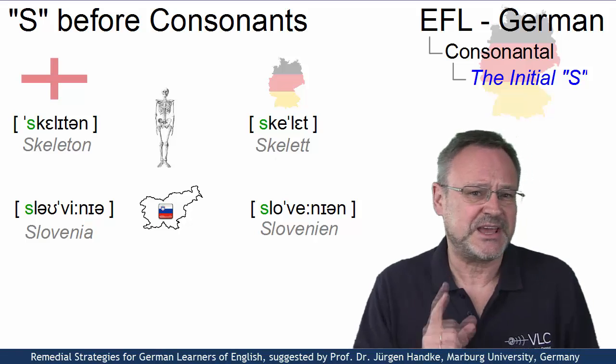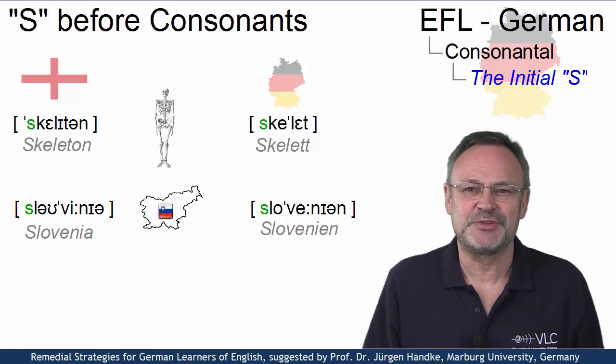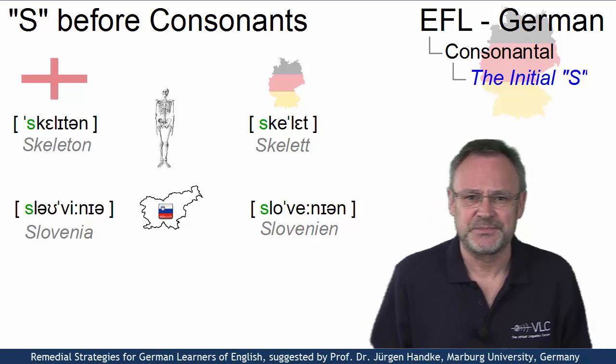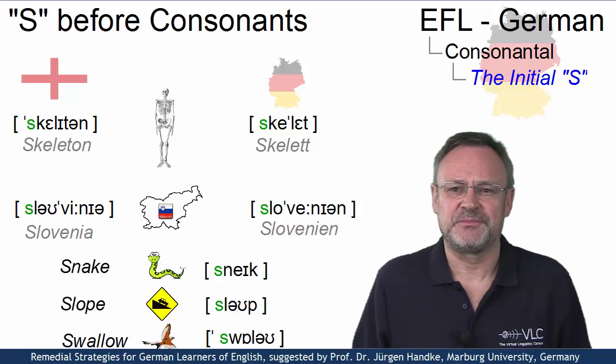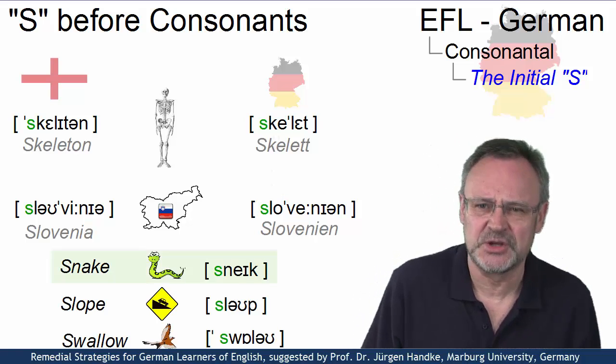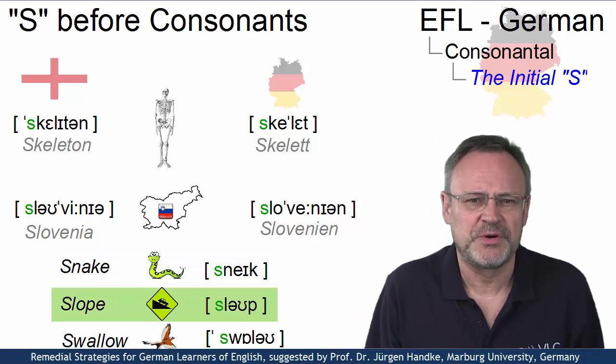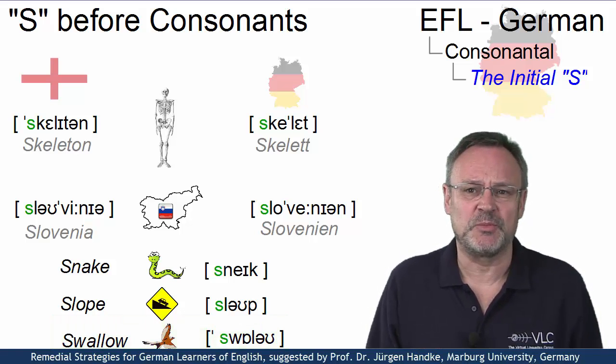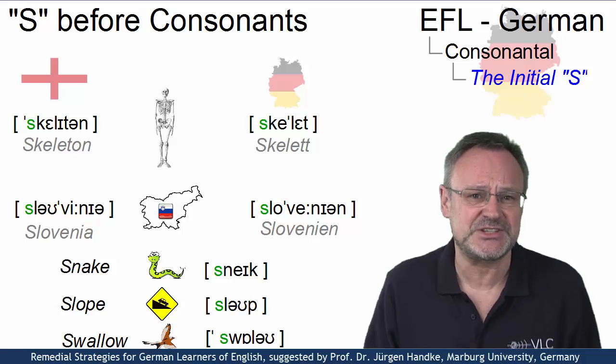In these cases, even Germans use an initial voiceless alveolar fricative. So once we are aware of this fact, present-day English words like snake, slope or swallow must be considered relatively uncomplicated as far as the initial S is concerned.